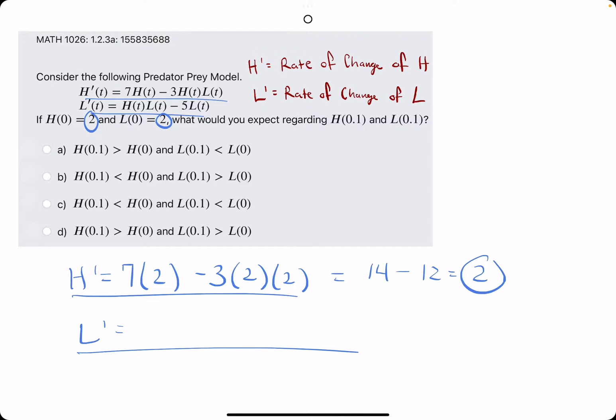For l, we have h times l. So 2 times 2 minus 5 times 2, which is l. We have 4 minus 10, so we get negative 6 for l prime.